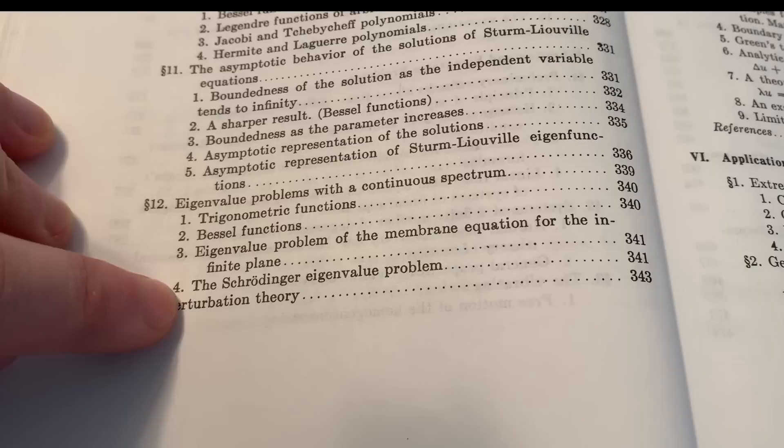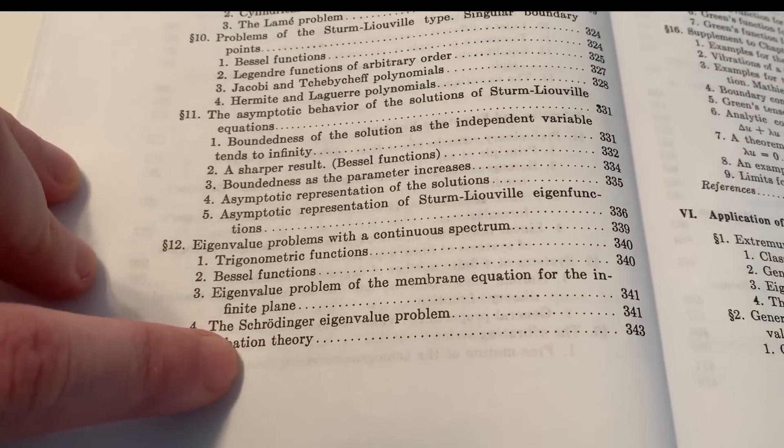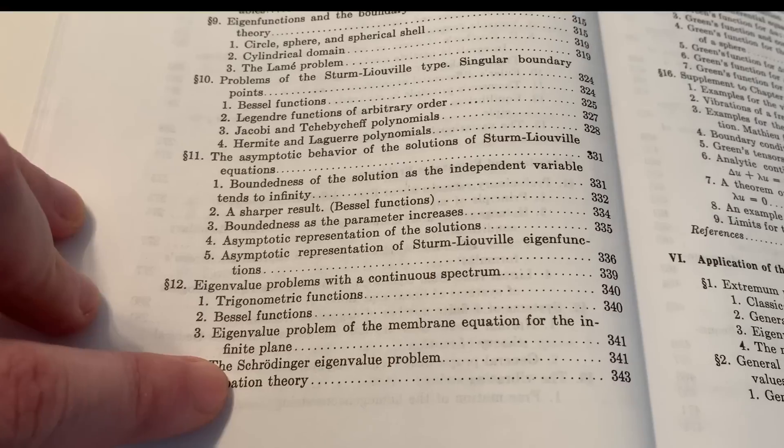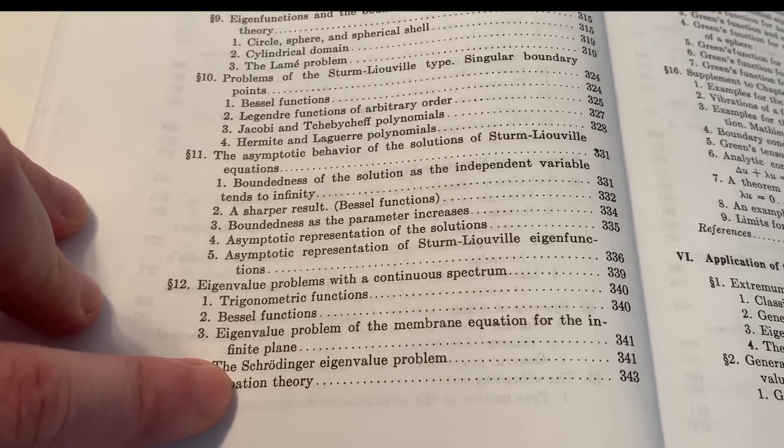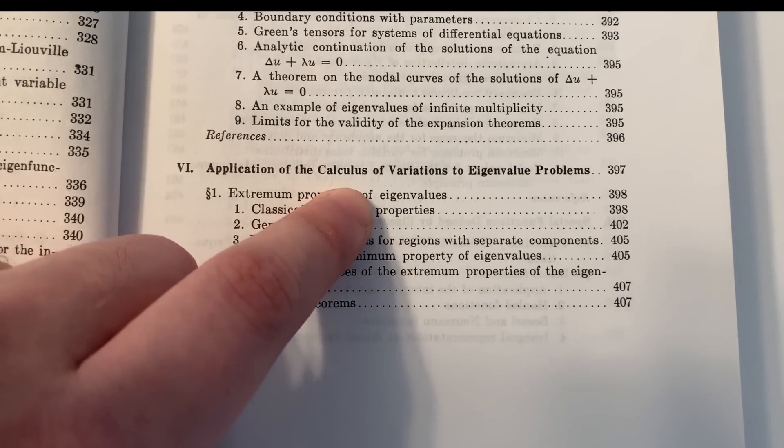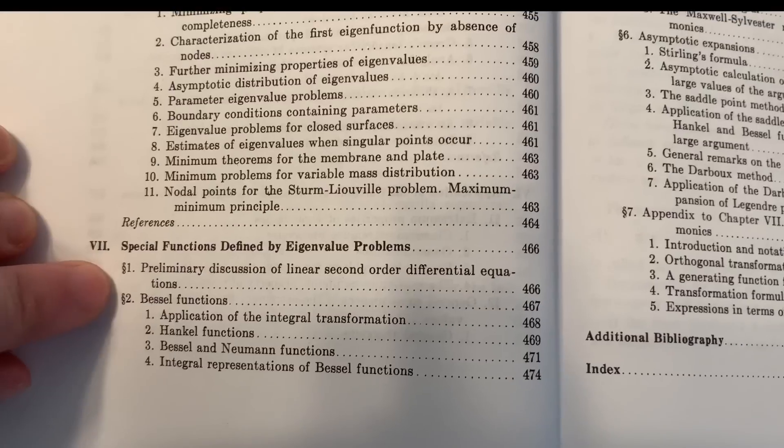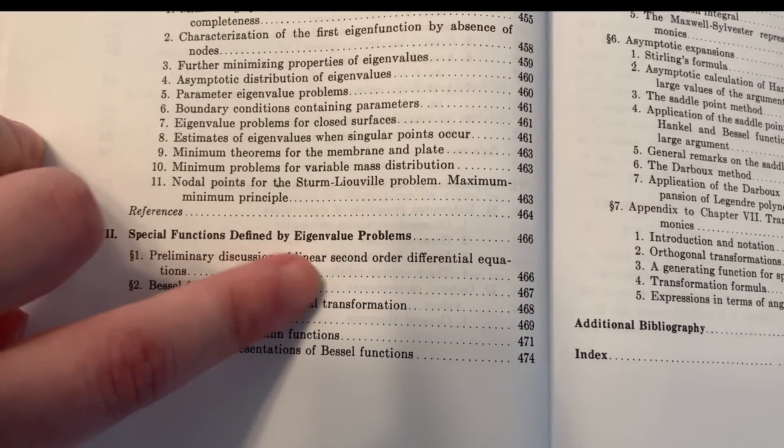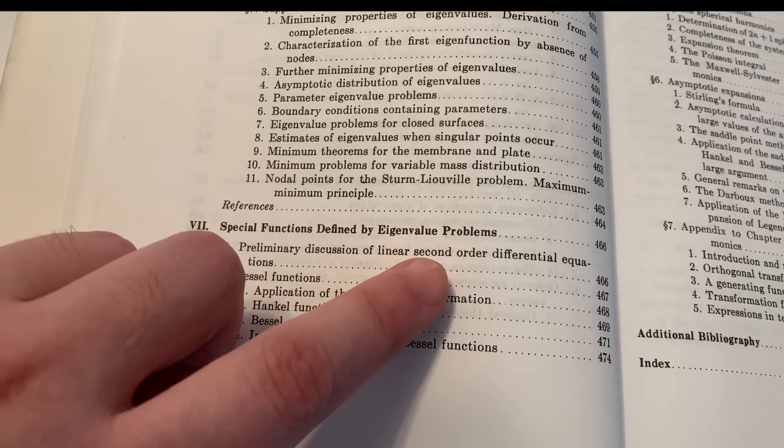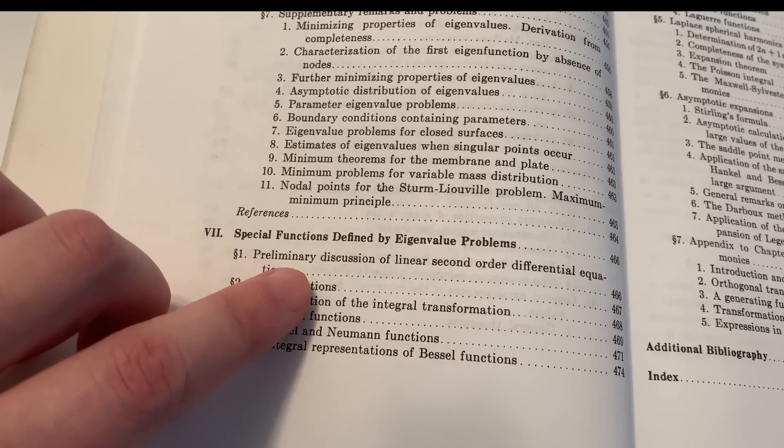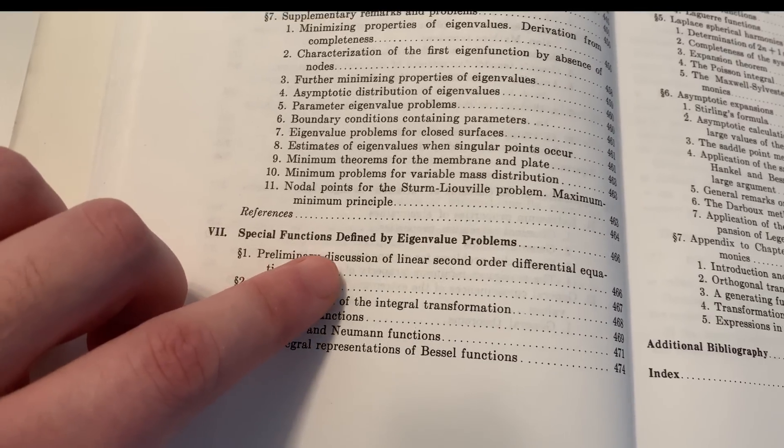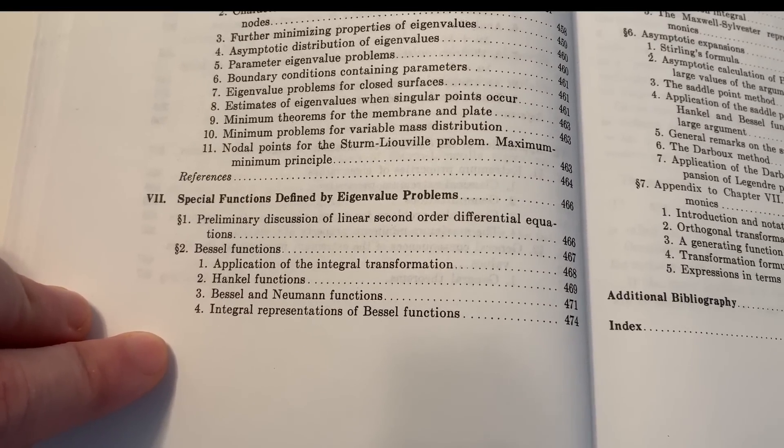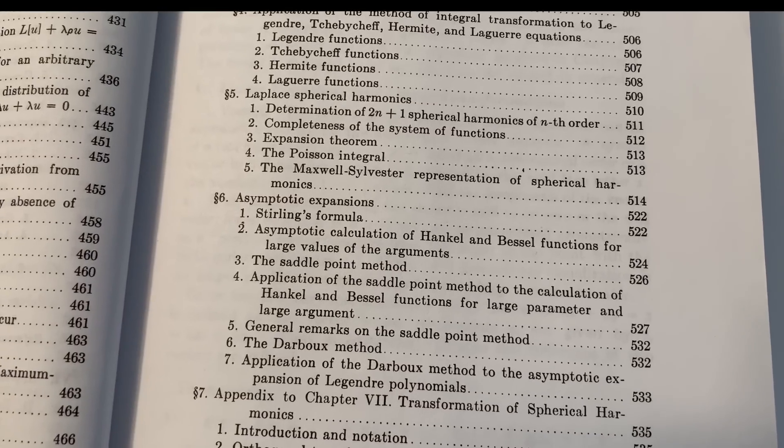The Schrödinger eigenvalue problem. If you study quantum mechanics, the Schrödinger eigenvalue problem, also known as the solution to the time-independent Schrödinger equation, gives us the energy levels of a quantum mechanical system. Applications of the calculus of variation to eigenvalue problems. And at the very end, we have special functions defined by eigenvalue problems. So the point of view of eigenvalue problems is taken to unify various special functions used in applied mathematics, which can often seem as a rather disconnected set of formulas. Just incredibly amazing stuff.